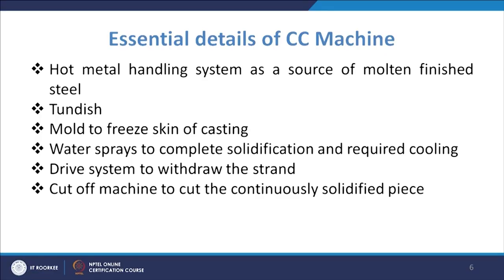These are the different types of continuous casting machines. Looking at the essential details of the continuous casting machine, you have the hot metal handling system as a source of molten finished steel. One is the system which handles this hot metal — the ladle which brings liquid metal from the furnace or from the steel melting place.